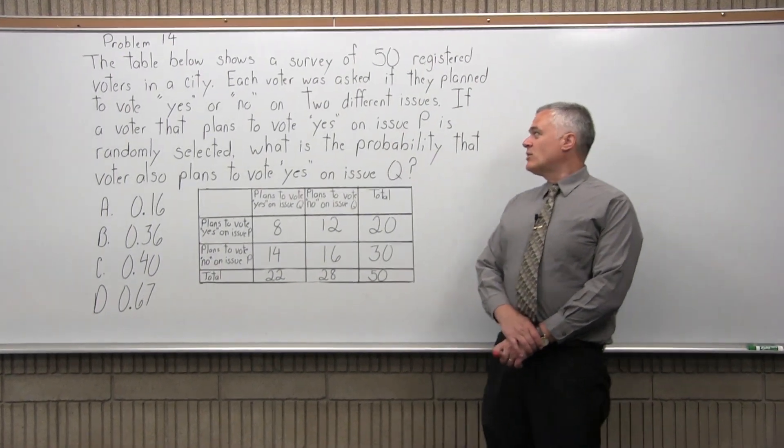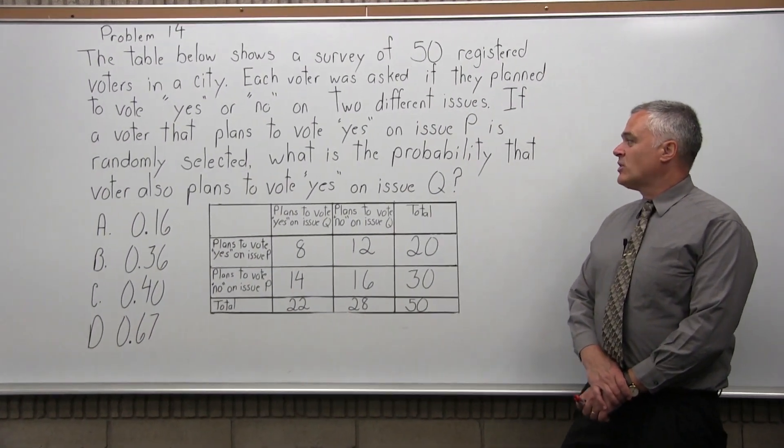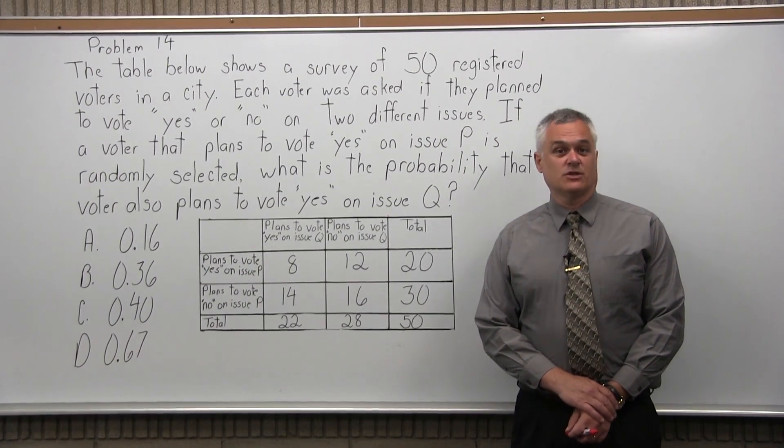If a voter that plans to vote yes on issue P is randomly selected, what is the probability that voter also plans to vote yes on issue Q?